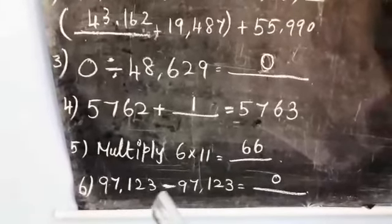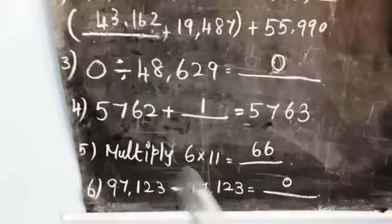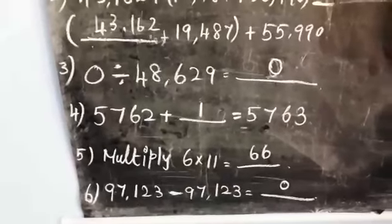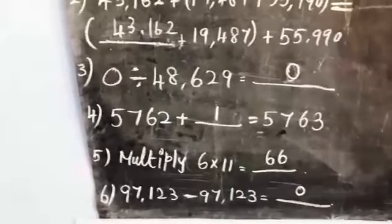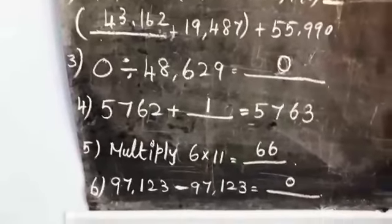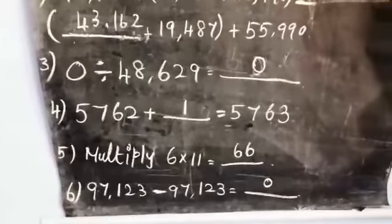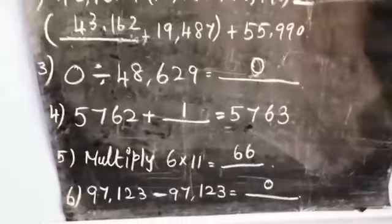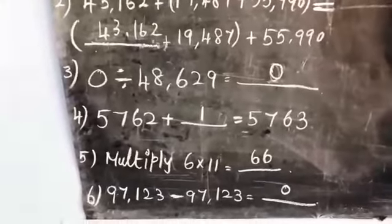When a number itself is subtracted from a given number, we get the answer 0.